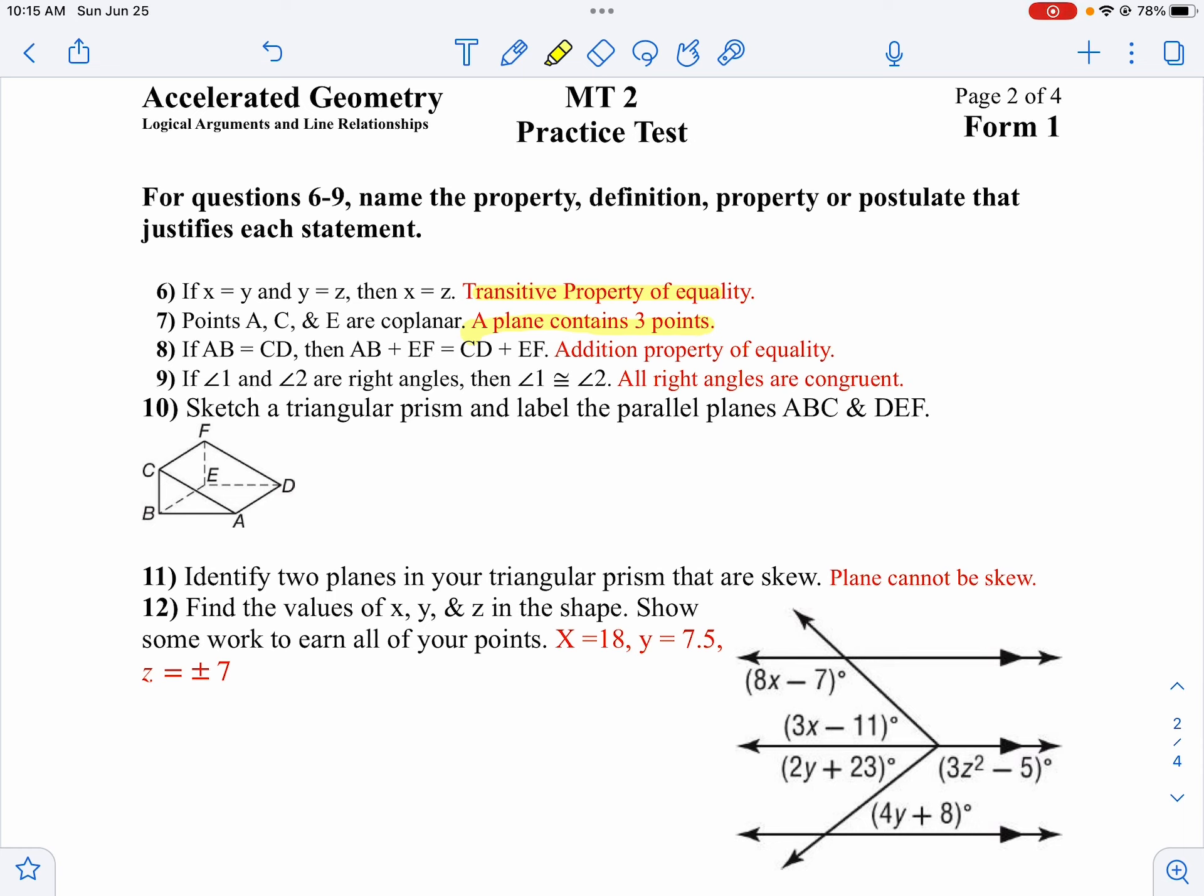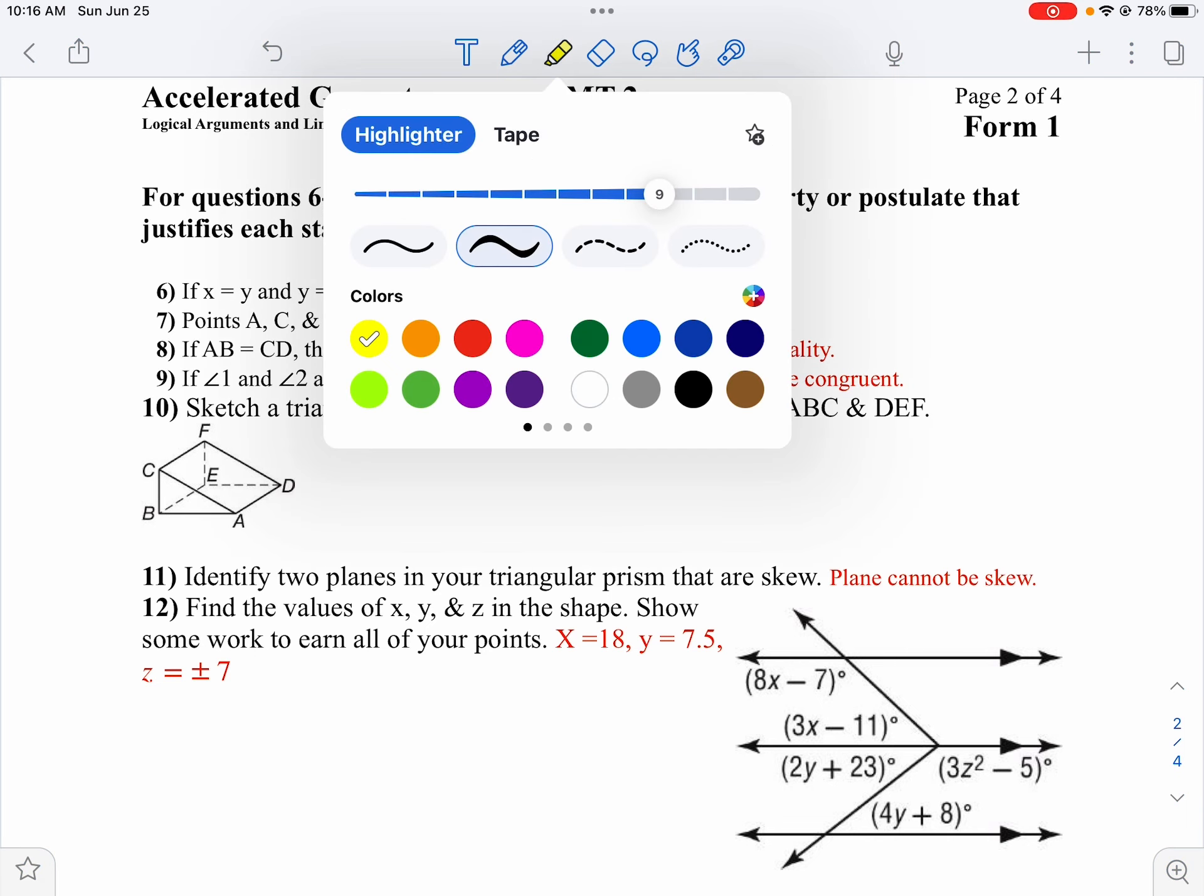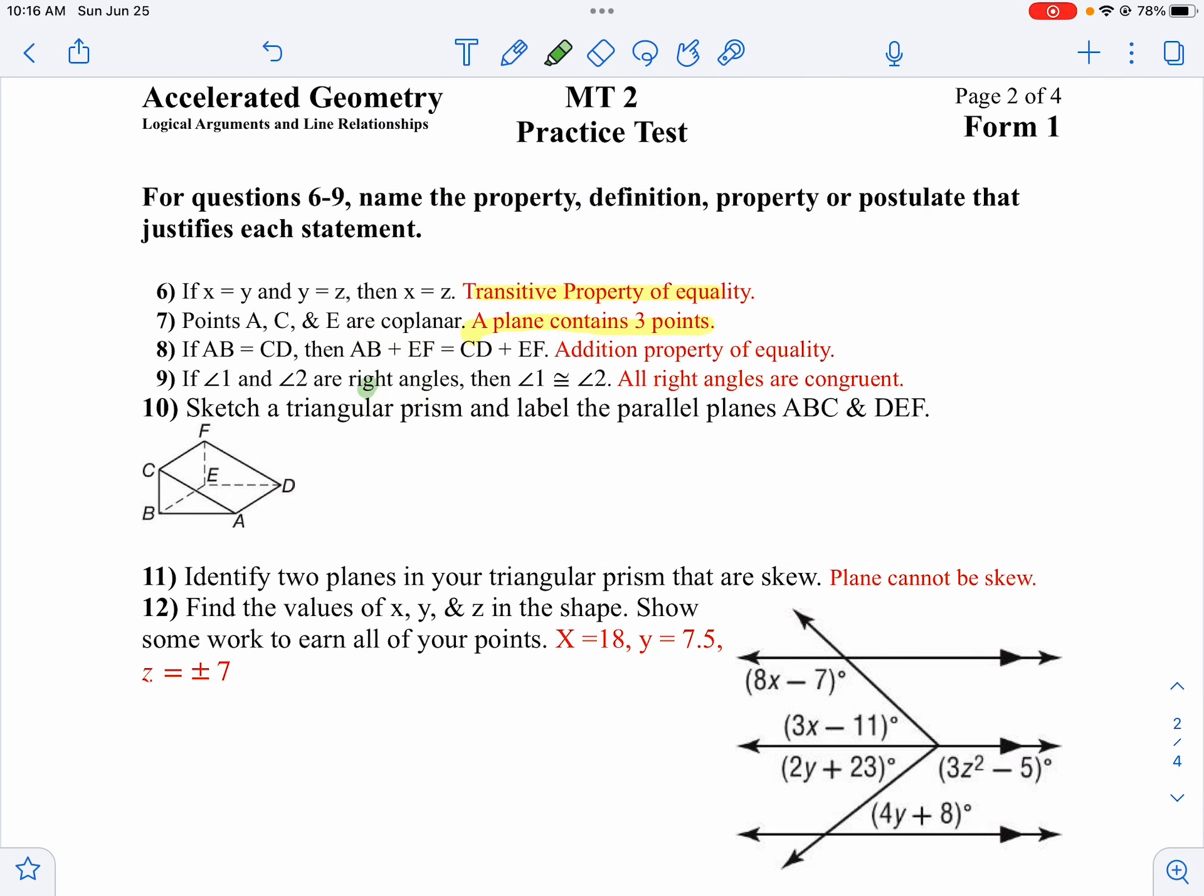On number 8, if AB equals CD, then AB plus EF equals CD plus EF. Notice we're adding the same thing to both sides, so that is our angle addition postulate, or angle addition property. Adding the same thing to both sides.